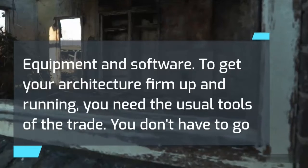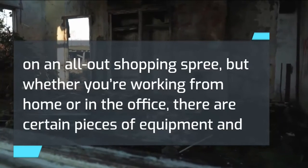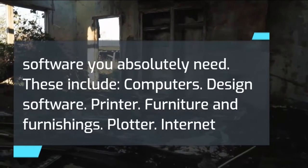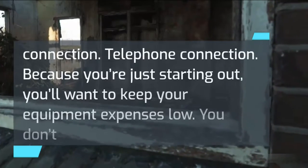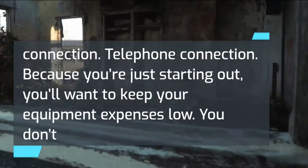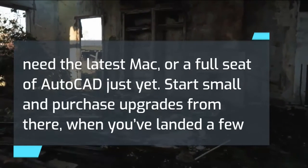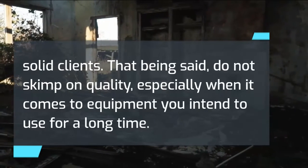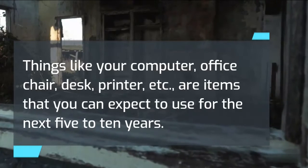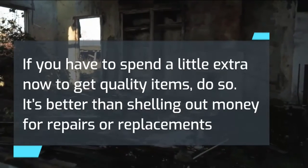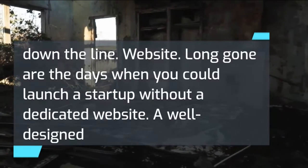To get your architecture firm up and running, you need the usual tools of the trade. Whether you're working from home or in the office, there are certain pieces of equipment and software you absolutely need, including: computers, design software, printer, furniture and furnishings, plotter, internet connection, and telephone connection. Because you're just starting out, keep your equipment expenses low — you don't need the latest Mac or a full seat of AutoCAD just yet. Start small and purchase upgrades when you've landed a few solid clients. That said, do not skimp on quality, especially for items like your computer, office chair, desk, and printer, which you can expect to use for the next 5-10 years. It's better to spend a little extra now than to shell out money for repairs or replacements down the line.